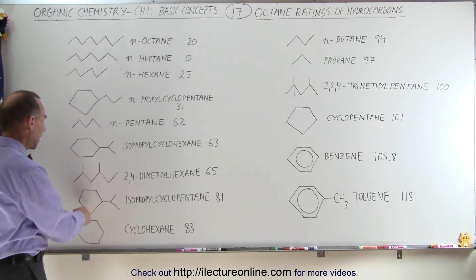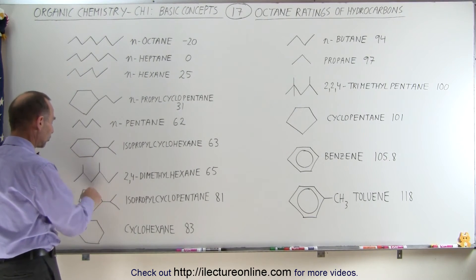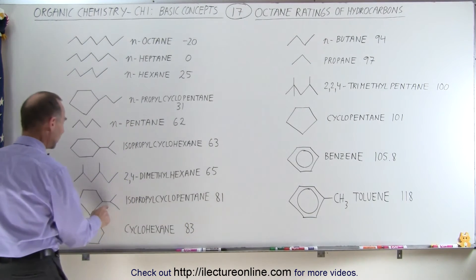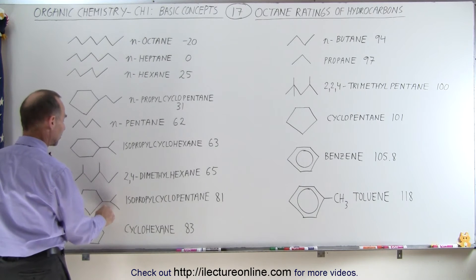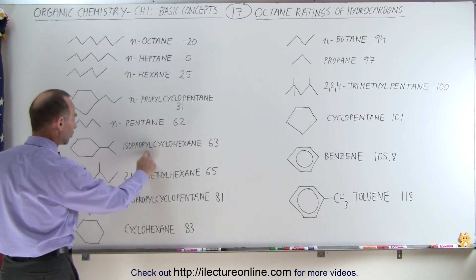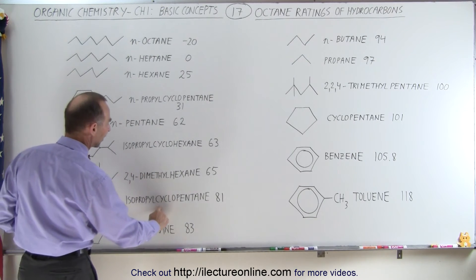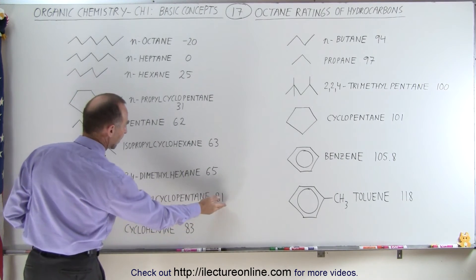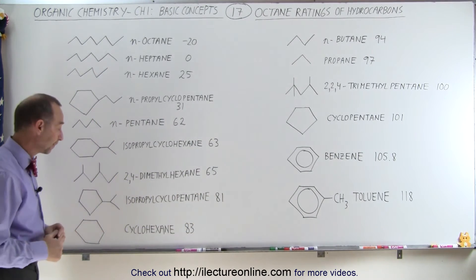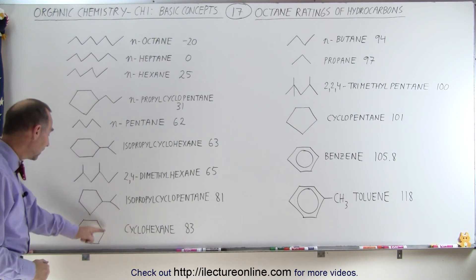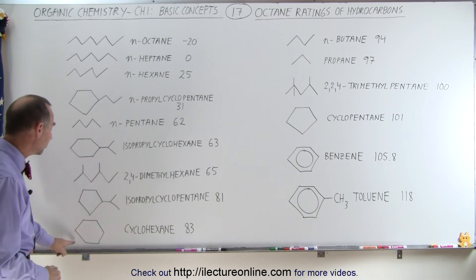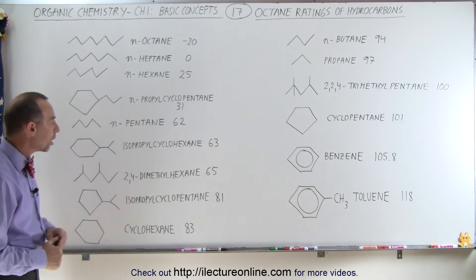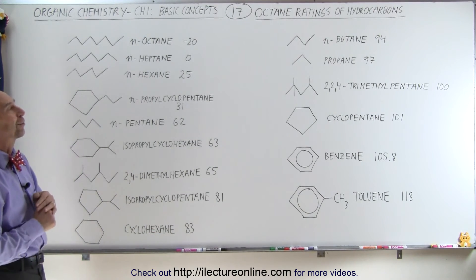The next one again — we have a cyclic structure with five carbons, so we see cyclopentane, and we have the same alkyl structure called isopropyl, so it's isopropyl cyclopentane versus isopropyl cyclohexane. Here the octane level is up to 81. The next one is simply a cyclic structure with no attachments, so this is simply cyclohexane with an octane rating of 83.